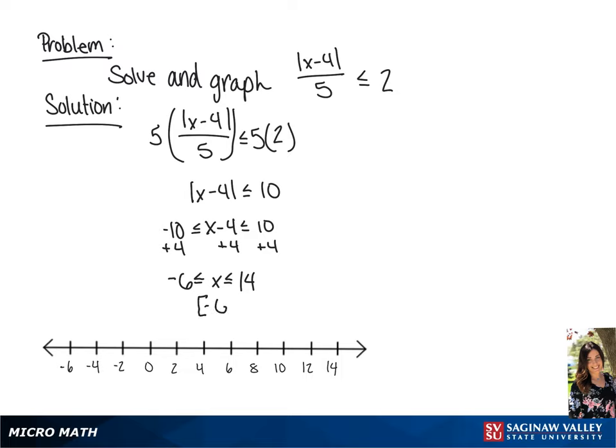In interval notation, this will be negative 6 to 14. Now we're going to graph this by drawing a closed circle around negative 6 and 14, and then connecting them.